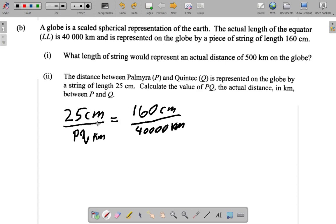Now here, what I can do is invert or find the reciprocal of both sides then multiply by 25. Or you could multiply both sides by PQ, then multiply by 40,000, then divide by 160.